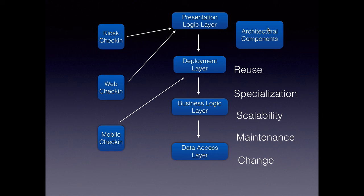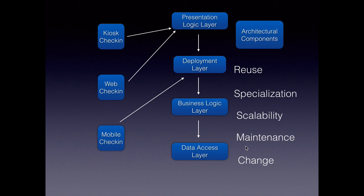Finally, we also have an architectural component layer. These are the architectural components which architects come up with, which can be used across applications and across these layers, and they can internally use third-party libraries. To summarize, layering is where we split our Java application into multiple layers instead of putting all our code into one single huge class. The several advantages are reusability, specialization, scalability, maintenance, and change. Once you start working with layers, you will realize all these benefits.